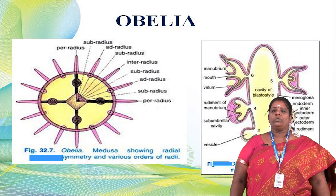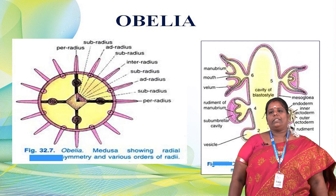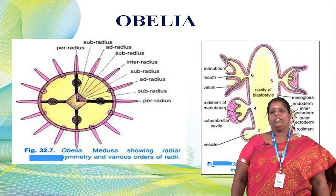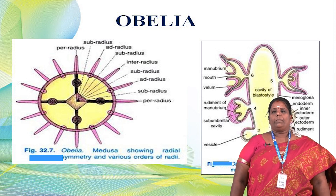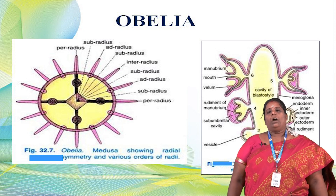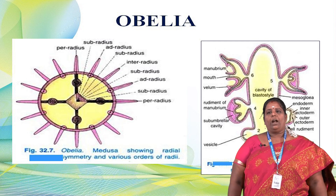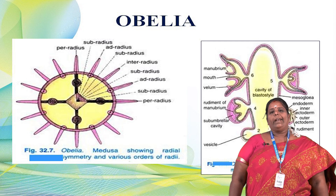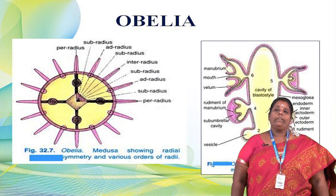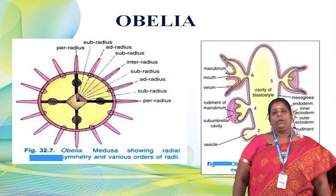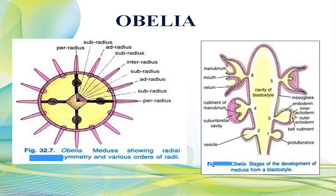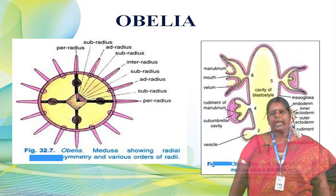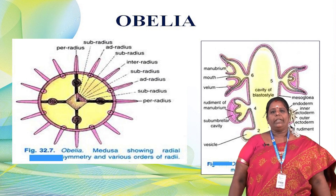The blastostyle development also has a rudiment, inner ectoderm, outer ectoderm, the sub-umbrella cavity, the velum region, the cavity of the blastostyle, and the important manubrium — which also acts as a mouth. There is also the mesoglea. These are the important parts of the blastostyle that develop from the medusa.